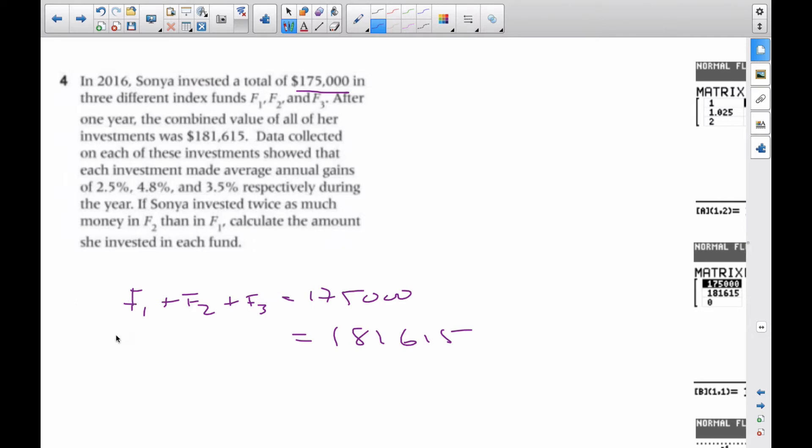So F1 is going to be 1.025 times F1 plus 1.048F2 plus 1.035F3 equals this much.